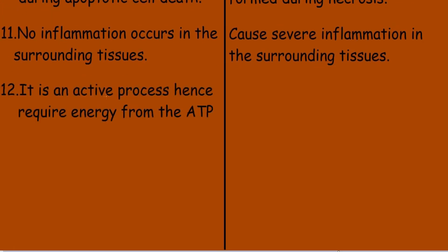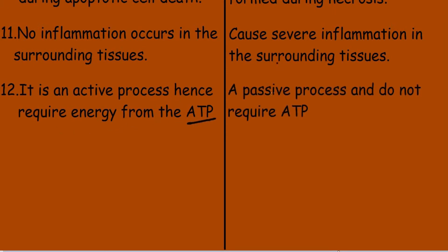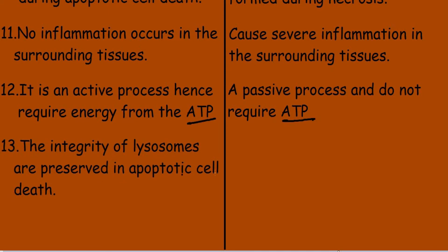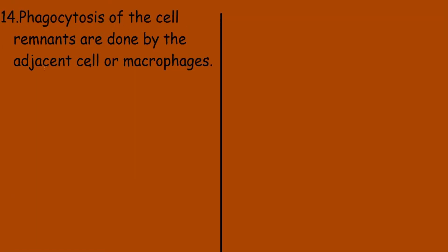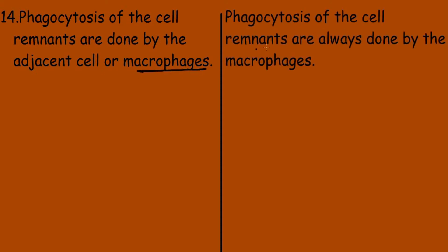Apoptosis is an active process and therefore requires energy in the form of ATP, while necrosis is a passive process and does not require any ATP. The integrity of lysosomes is preserved in apoptotic cell death, whereas lysosome integrity is compromised and leakage occurs during necrosis. For apoptosis, phagocytosis of cell remnants is performed by adjacent cells or macrophages, but during necrosis, phagocytosis is always done by macrophages.